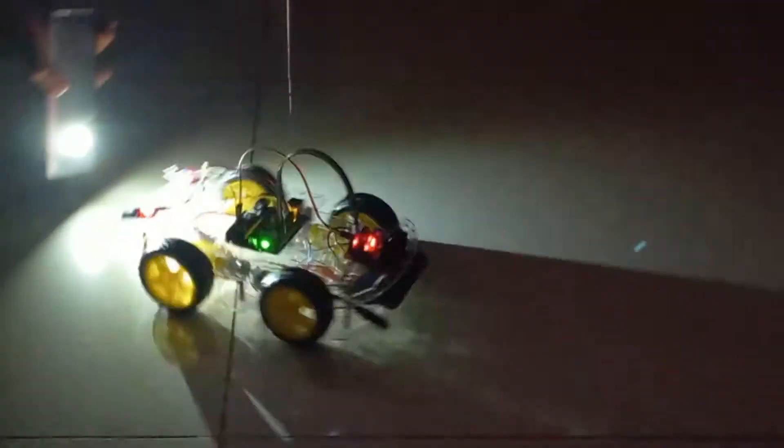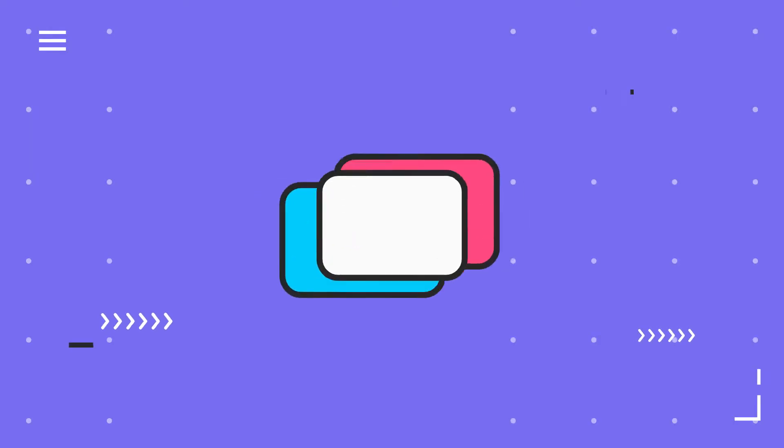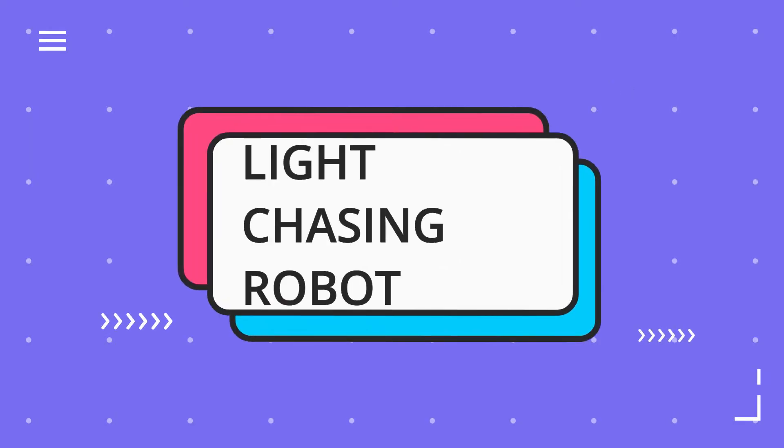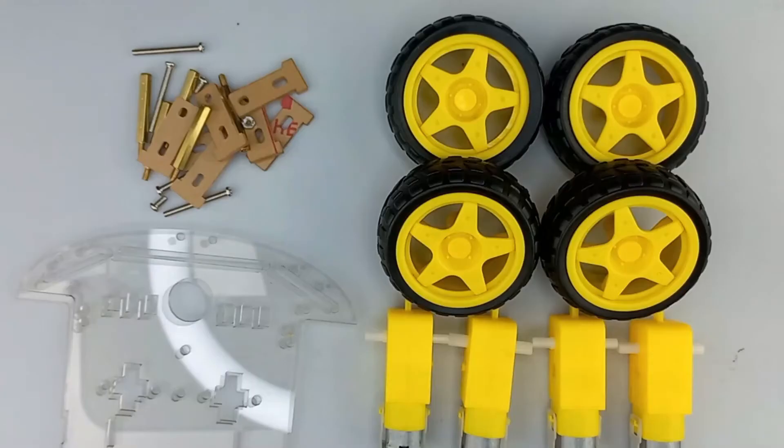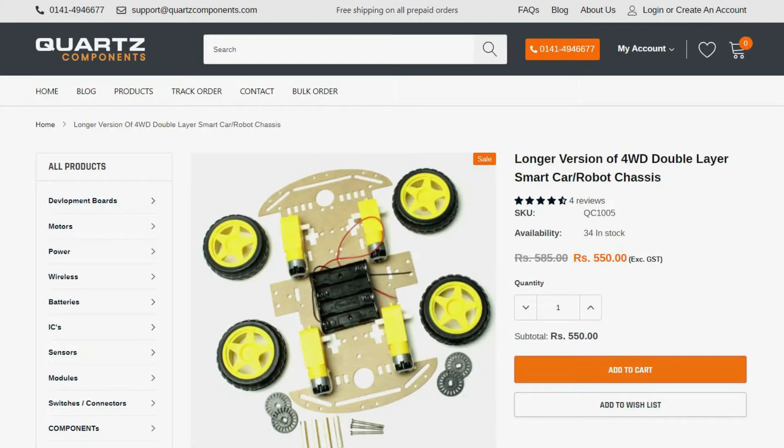Hey guys, welcome to Quartz Components. In this tutorial we are going to make a light-chasing robot. It will detect the light with the help of two LDR modules placed at the front of the robot car and will move accordingly. So let's get started and build this robot car.